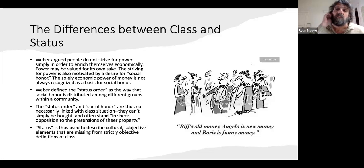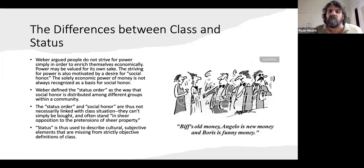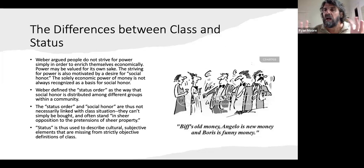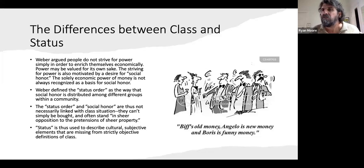What Weber is introducing here is the idea that status is related to class but not the same thing as class. It describes the cultural, subjective elements that are missing from strictly objective definitions of class. Status is more of a subjective category — how people understand themselves and relate to the larger status order. It's not necessarily something you can measure with income or wealth; it's more of a cultural category.